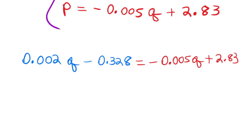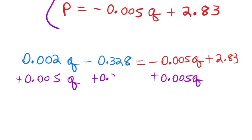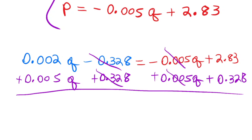To solve for Q, I can add 0.005Q to both sides, and I can also add 0.328 to both sides. These will cancel on the left side, these will cancel on the right side. So my left side will be 0.007Q, while the right-hand side — since those cancel out, the 0.005Q terms cancel — all we have left is 2.83 plus 0.328, which amounts to 3.158.